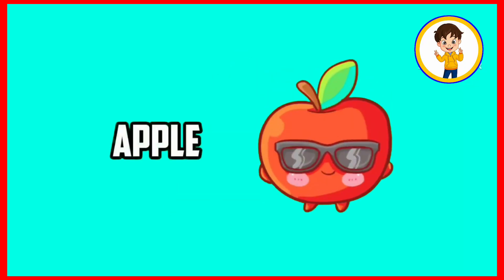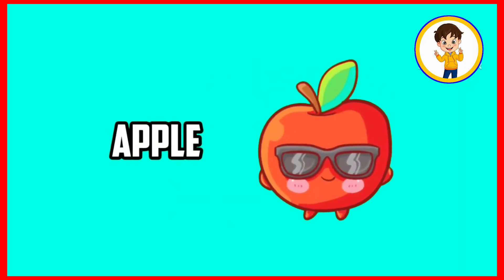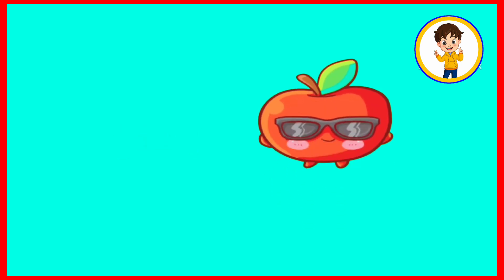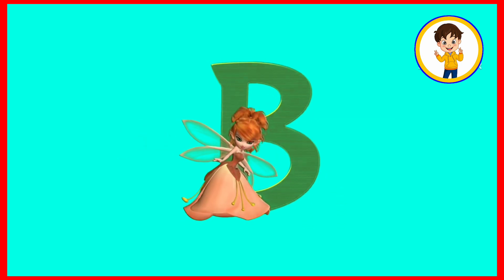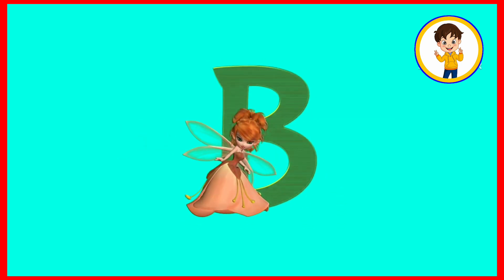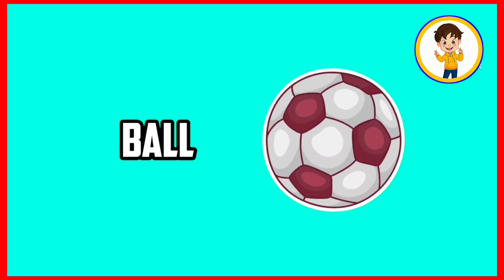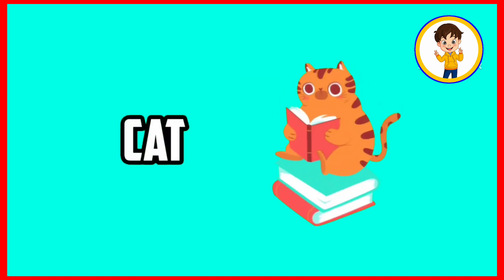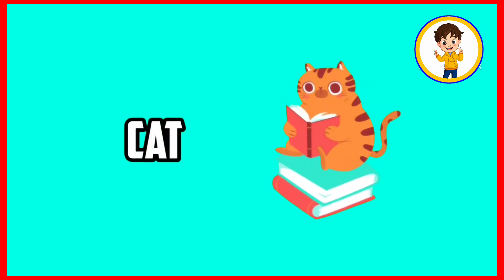A. A is for apple. Apple means save. B. B is for ball. Ball means gain. C. C is for cat. Cat means billy.